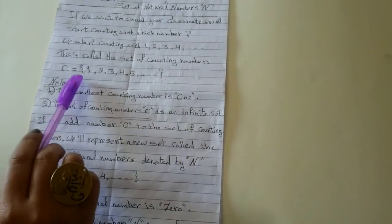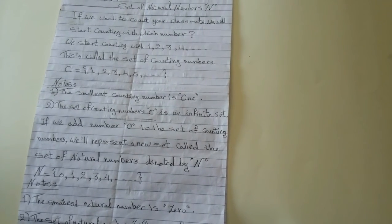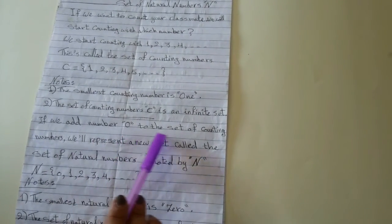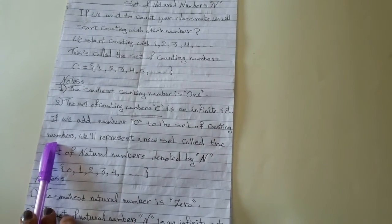Where is number zero? We don't have number zero in counting numbers. If we add number zero to the set of counting numbers, we will represent a new set.